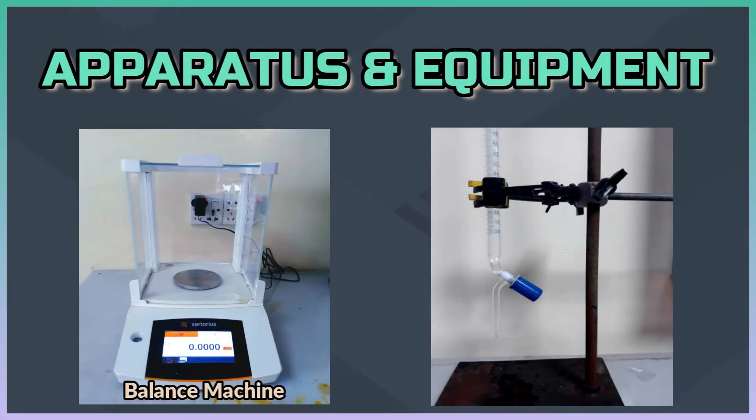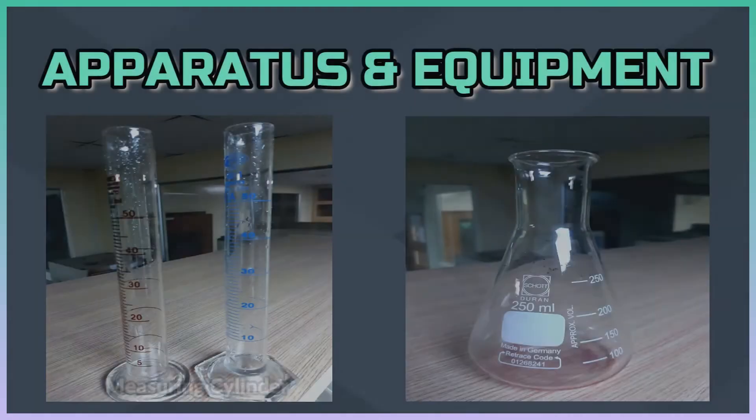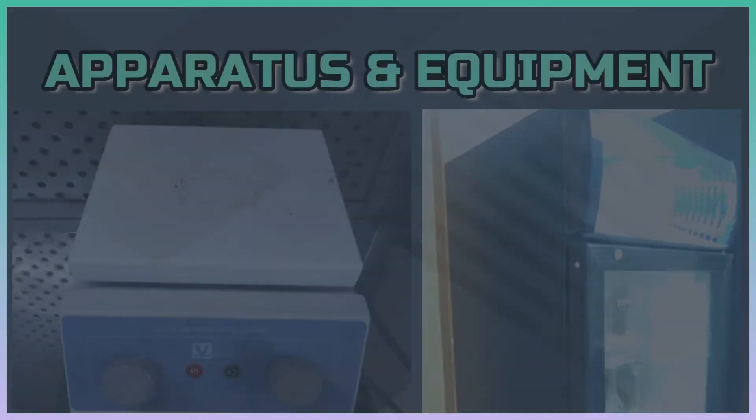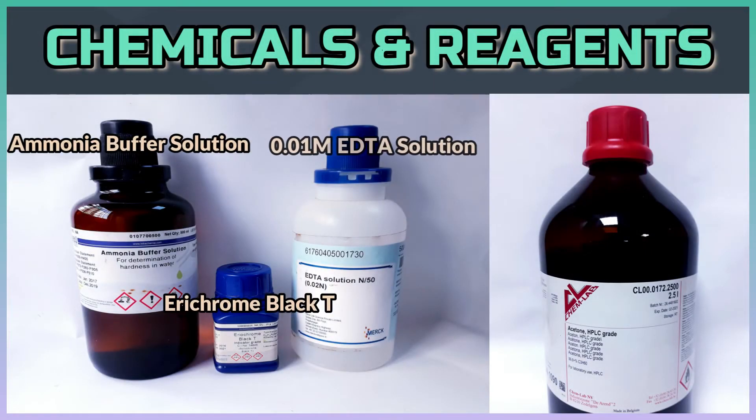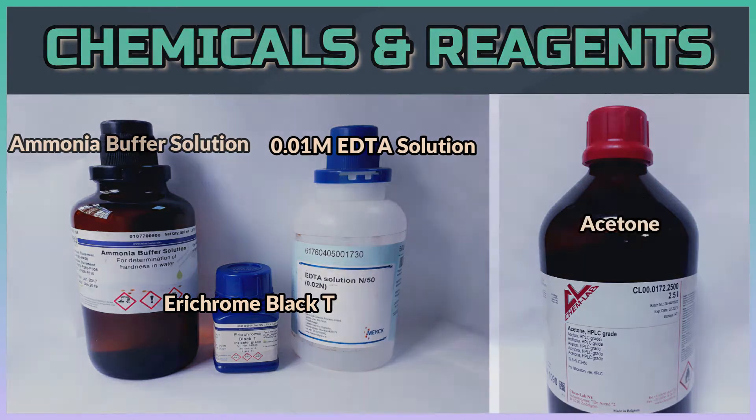To do the test we need a balance machine, burette with stand, measuring cylinder, conical flask, hot plate, refrigerator, ammonia buffer solution, erichrome black tea, 0.01 molar EDTA solution, and acetone.